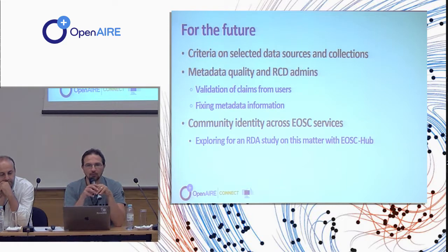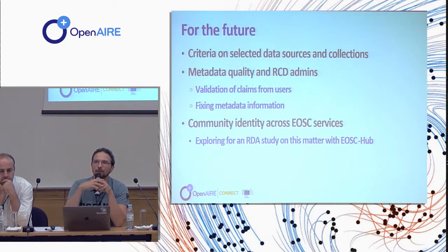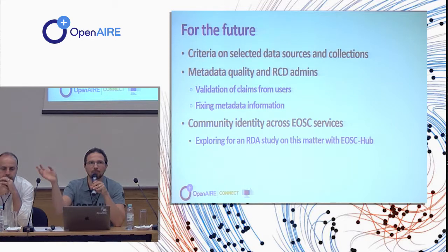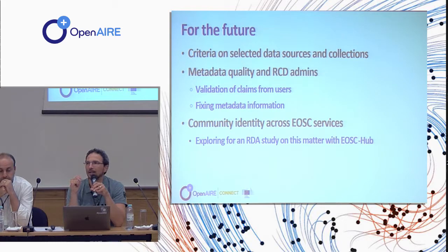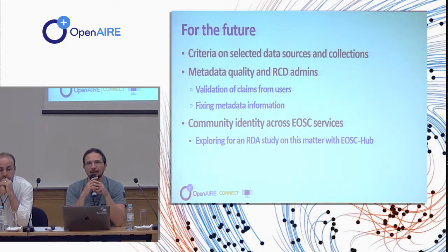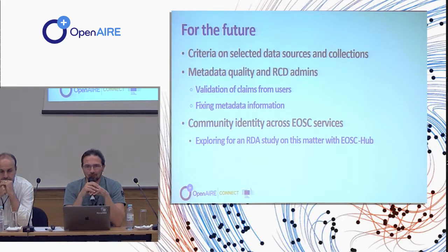For the future, what we are going to introduce is some logic that allows us not only to specify a data source among the ones we have — so selecting a content provider and saying everything in this content provider belongs to my community — but we'd like to have criteria. So not all content from a data source will belong to mine, but only those matching certain conditions. This is because in most cases the data source can include several things that are not necessarily part of the community. Even if it's 20% of the objects, saying everything belongs to my community is wrong. So we'd like to have ways of doing this, and we're thinking of what criteria to apply. We have ideas, and we welcome discussion.